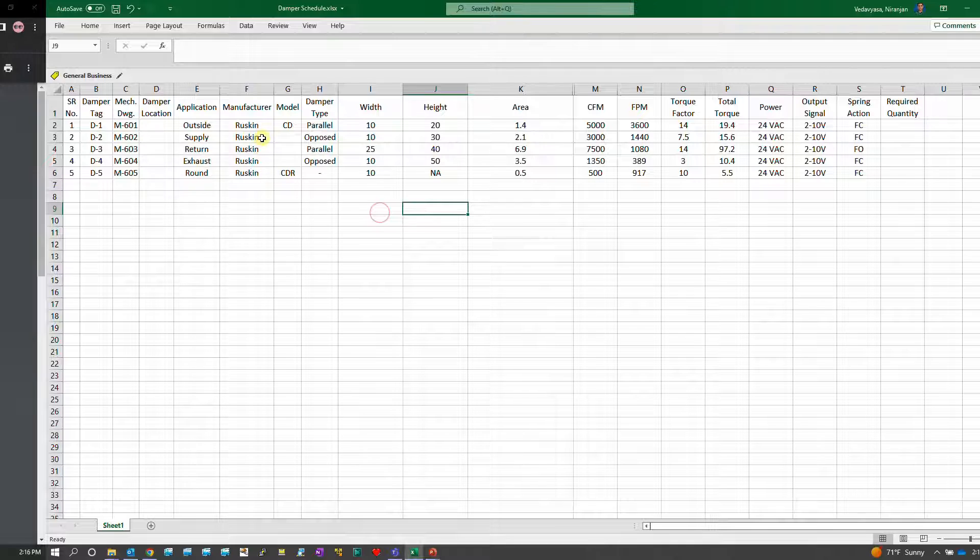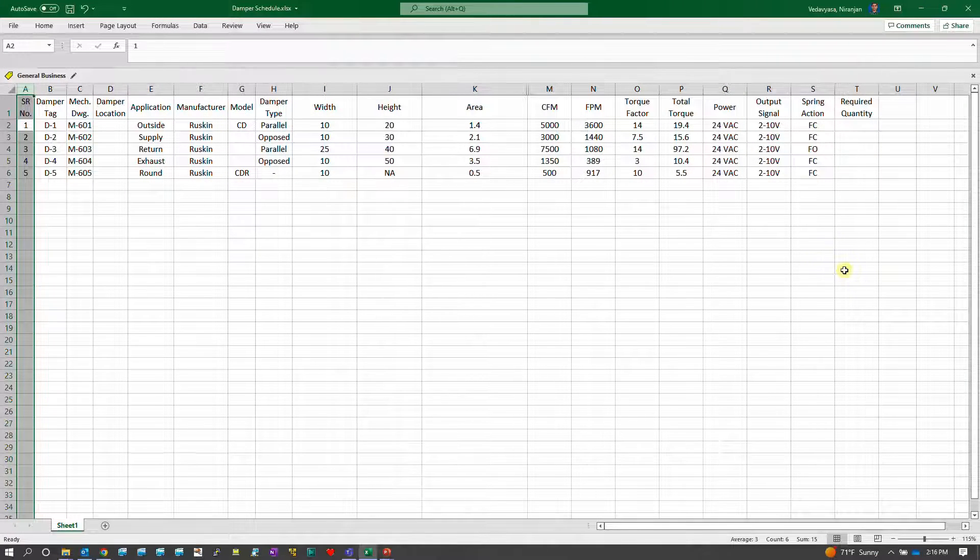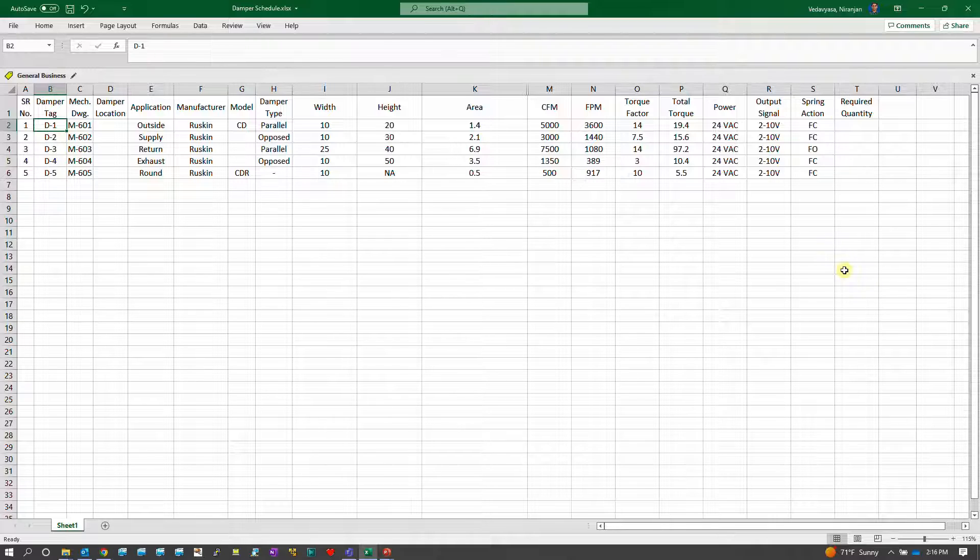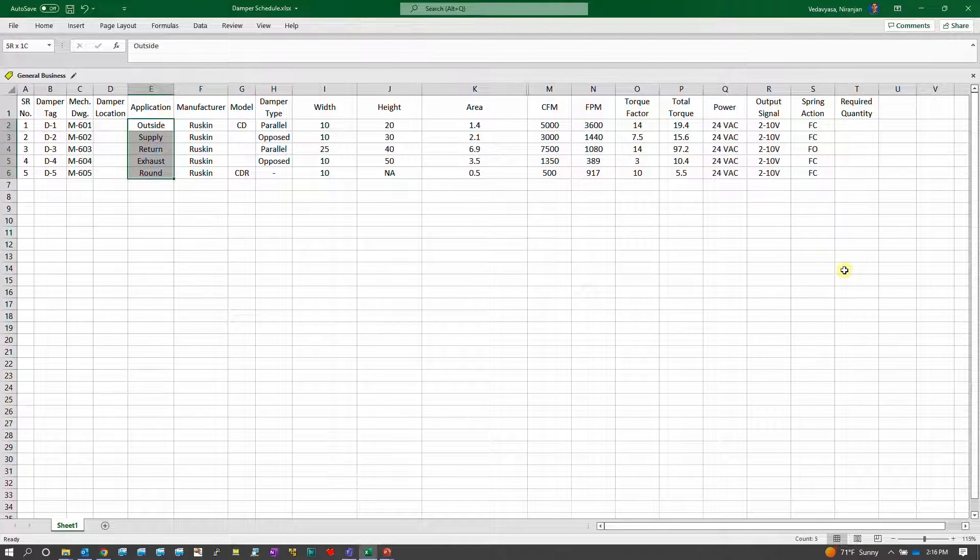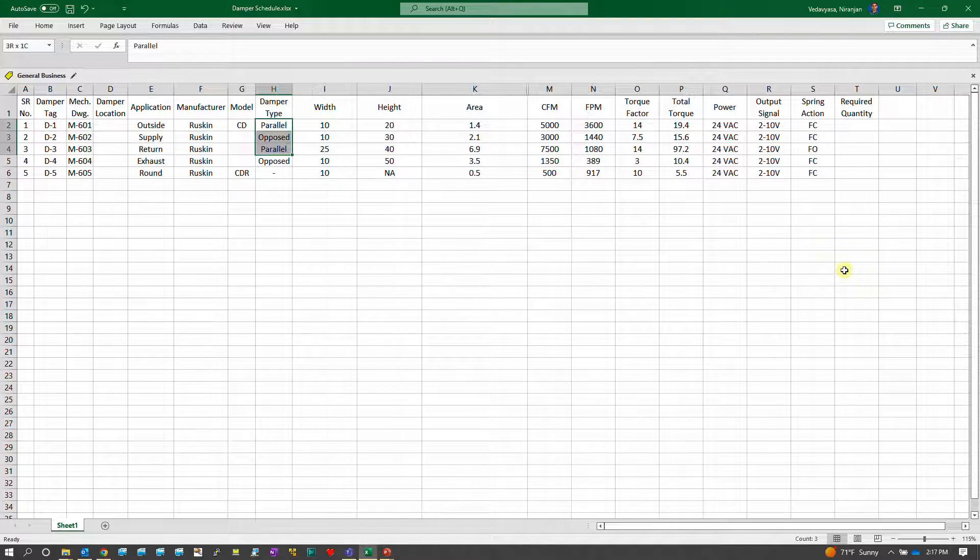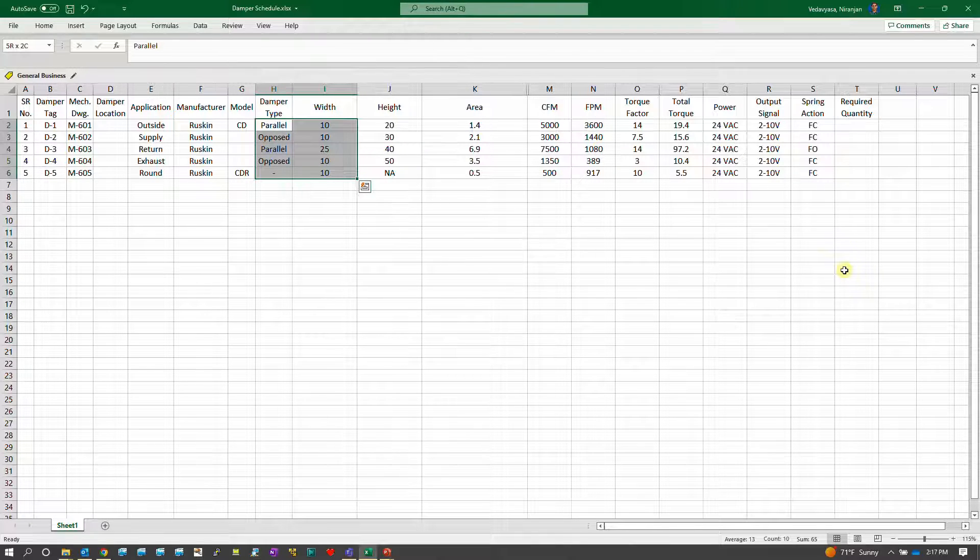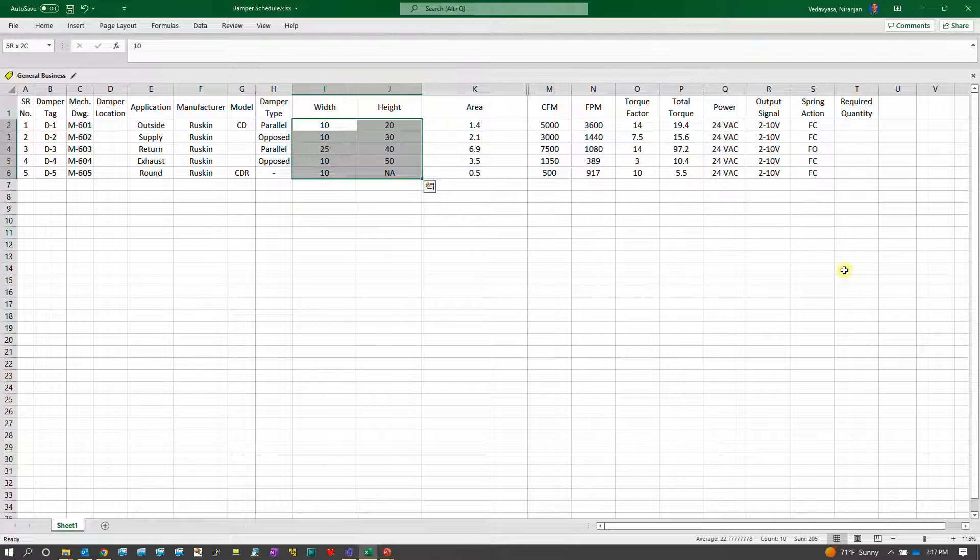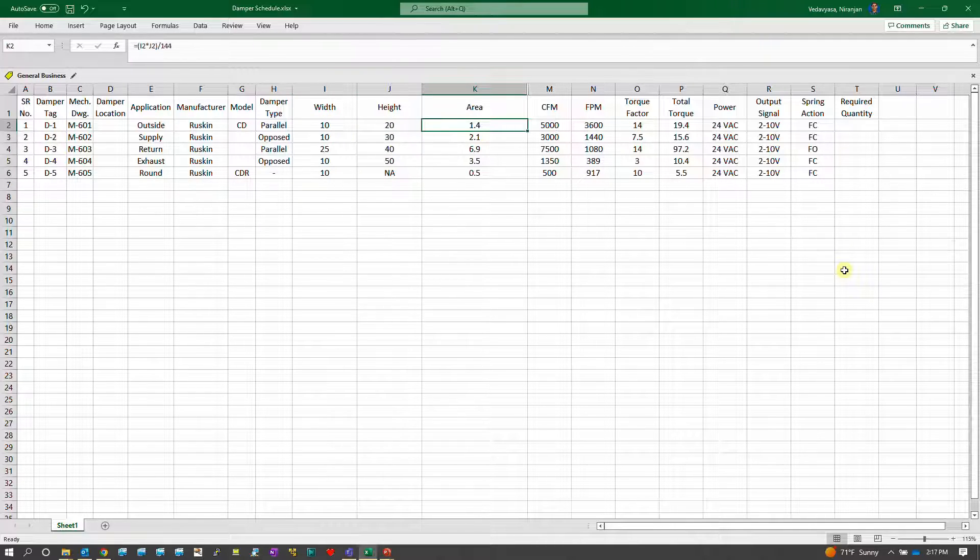I have a sample spreadsheet which is made for damper selection. Let's say we have five different dampers which is one for outside, supply, return, exhaust, and round damper. I'm taking consideration of the manufacturer Ruskin and using their model CD and CDR. CD is for rectangular and square and CDR is for the round dampers. You'll get all this information of what the damper type is, if it is parallel or opposed from your drawings.